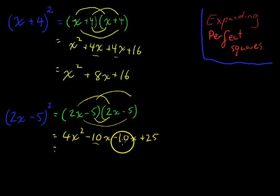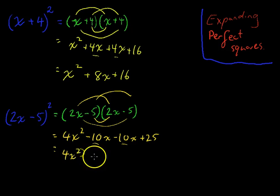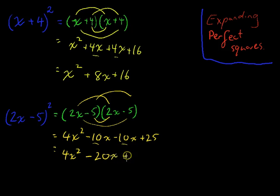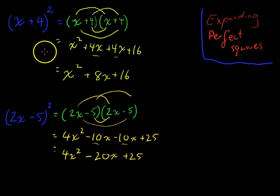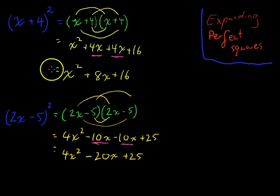You can see the like terms here: 4x squared, then negative 10x and negative 10x combine to give negative 20x, plus 25. Now you should see a pattern starting to form — the middle terms are always the same when we're dealing with perfect squares, so they join up.